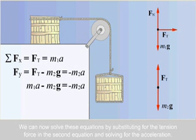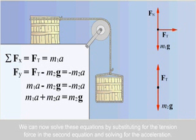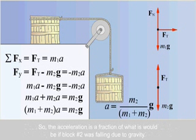We can now solve these equations by substituting for the tension force in the second equation and solving for the acceleration. So the acceleration is a fraction of what it would be if block number two was falling due to gravity.